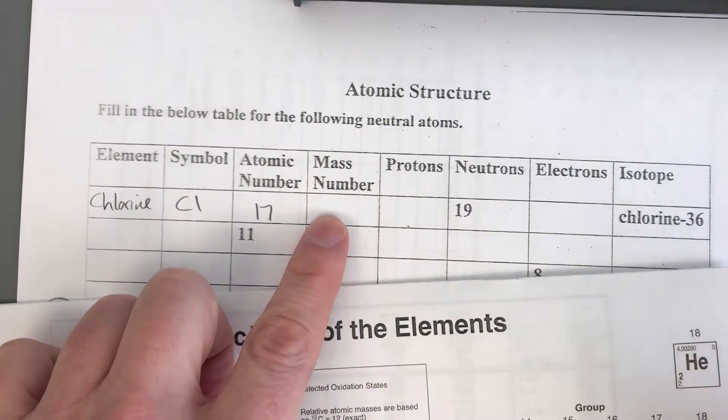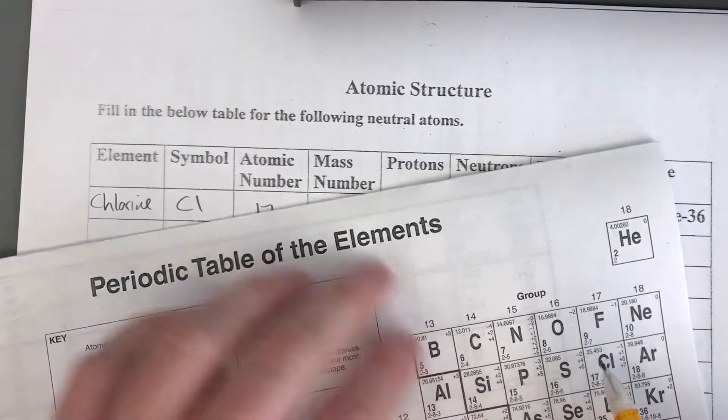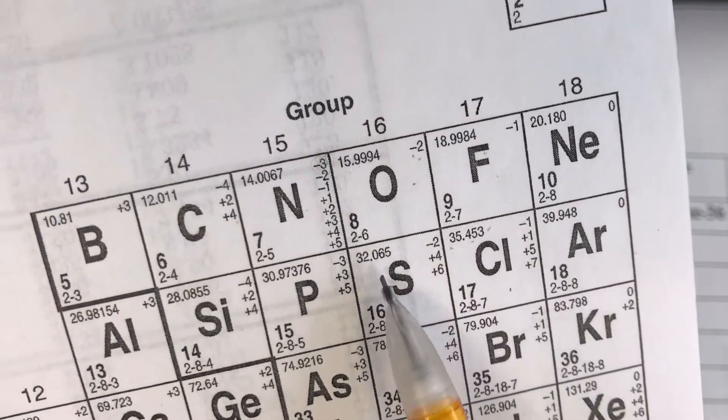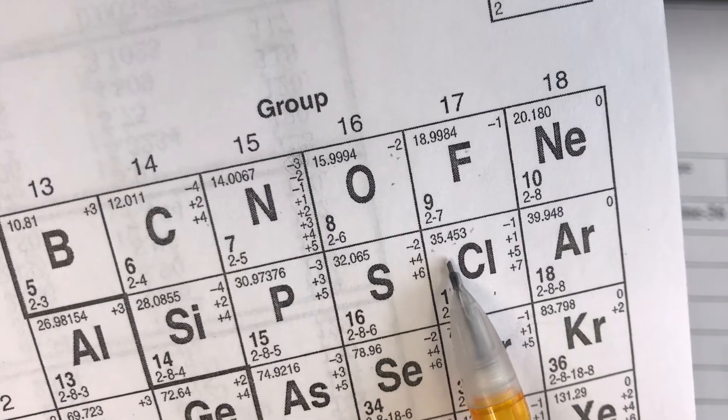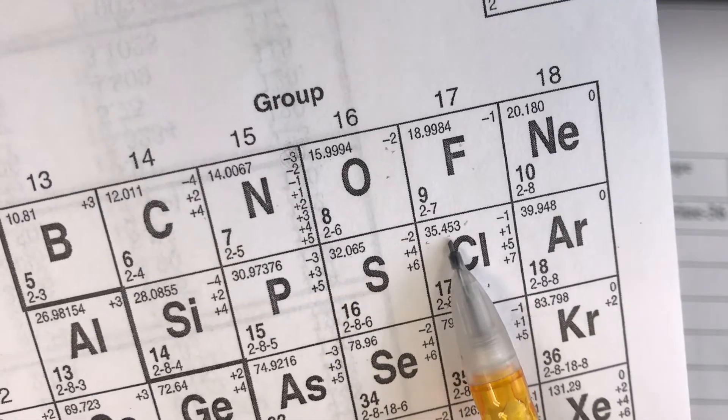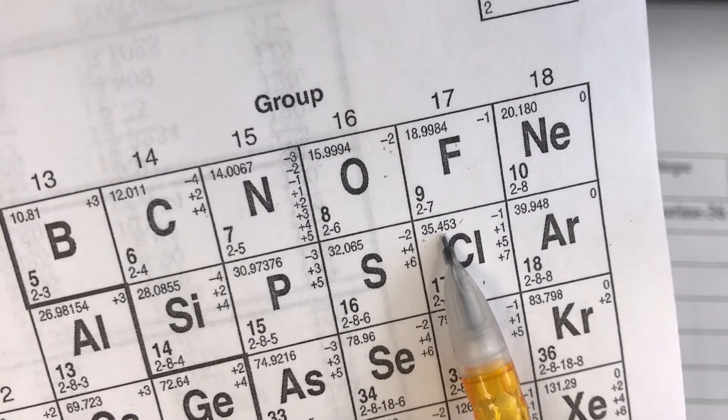Now the mass number is taken by looking at the actual value that we have here. I'll bring it a little bit closer so we can zoom in and actually taking that number and rounding it. If we look at this 35.453 that would round down.